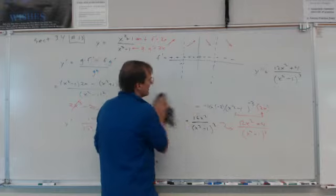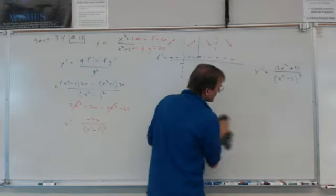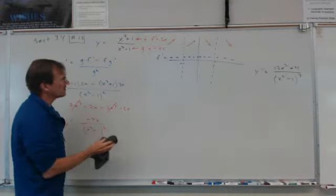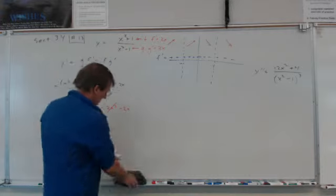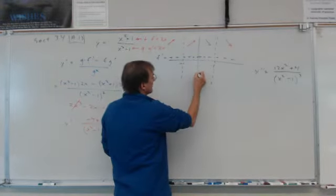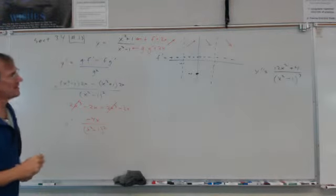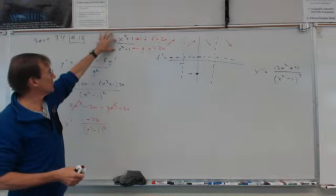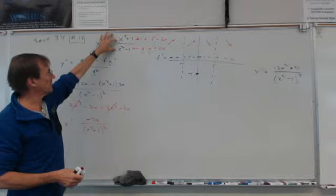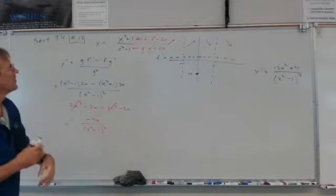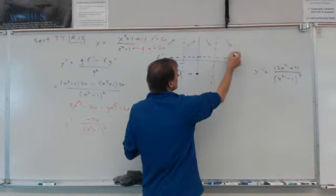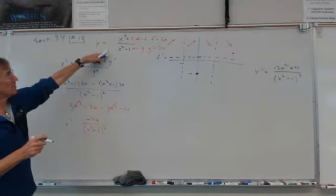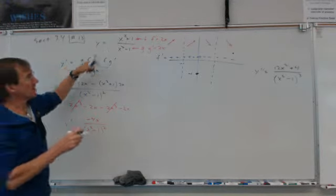Looking at concavity: plugging in 0 gives a function value of negative 1, and plugging in 2 gives 5 thirds, which is positive. Plugging in negative 2 gives the same, 5 thirds. So we can start sketching the graph using these values.